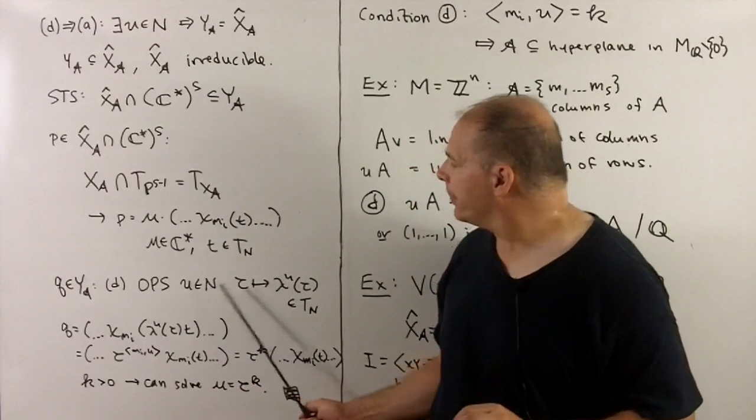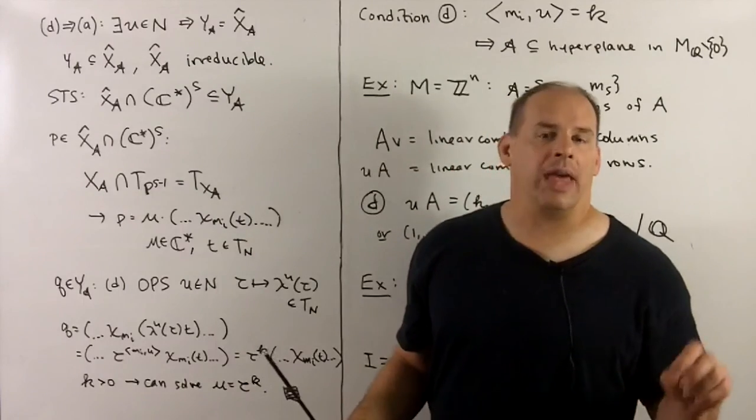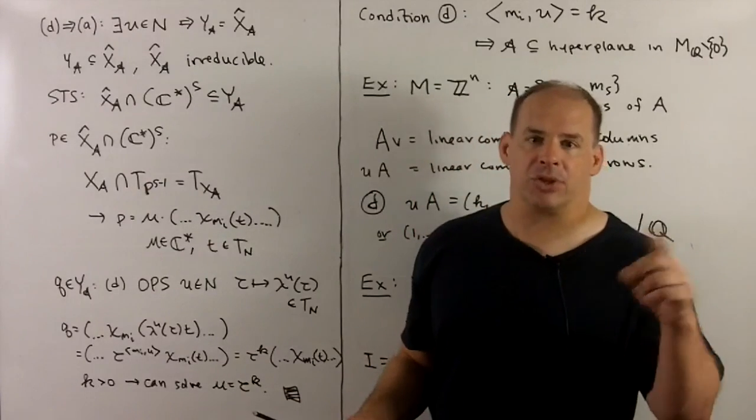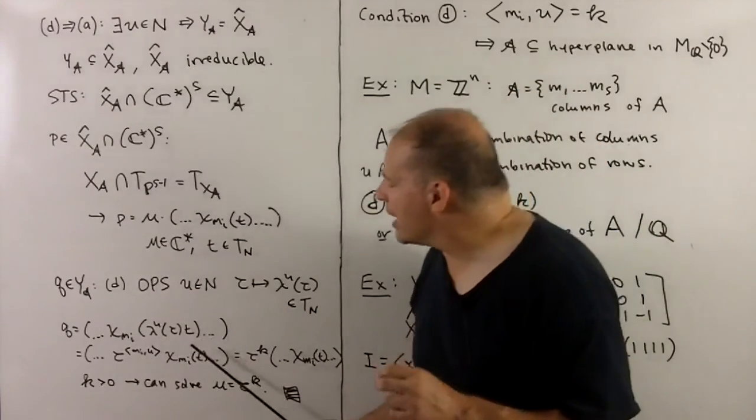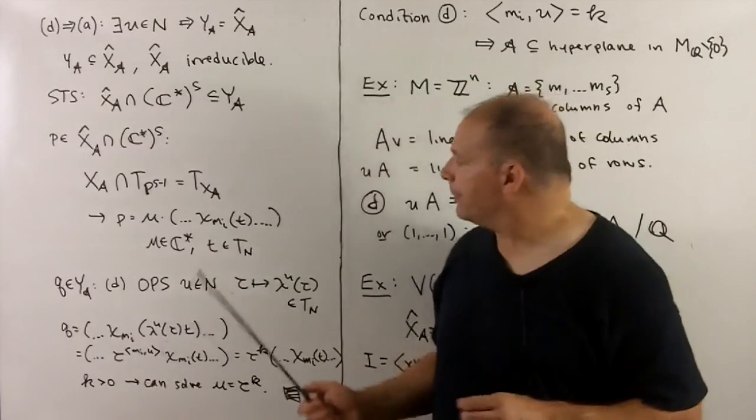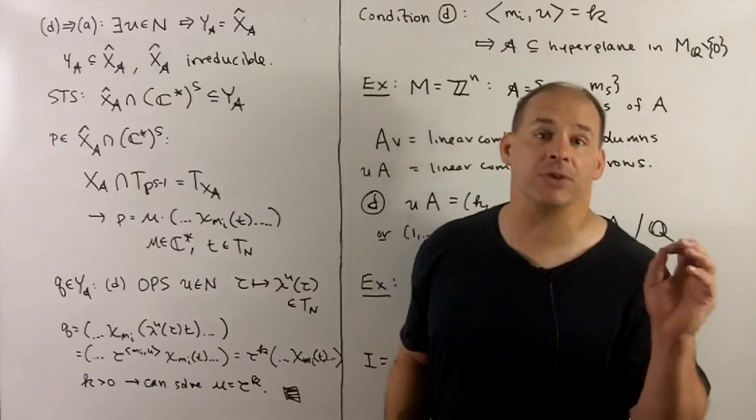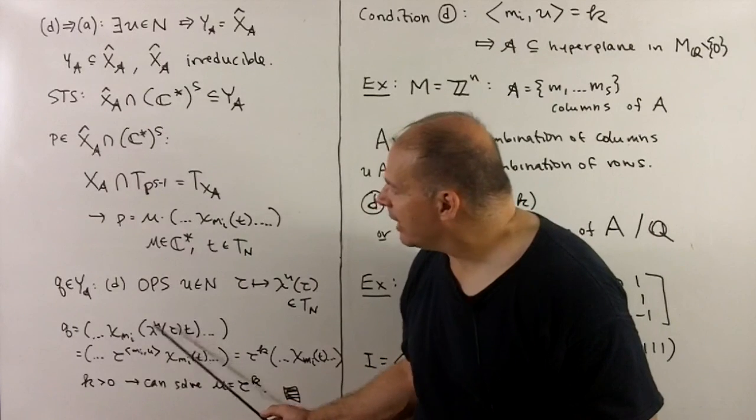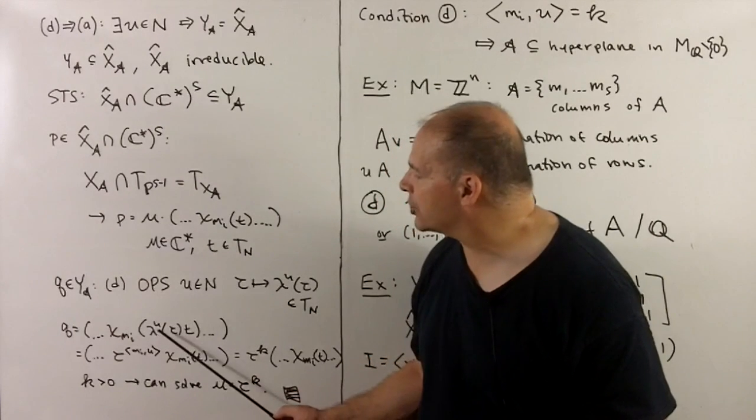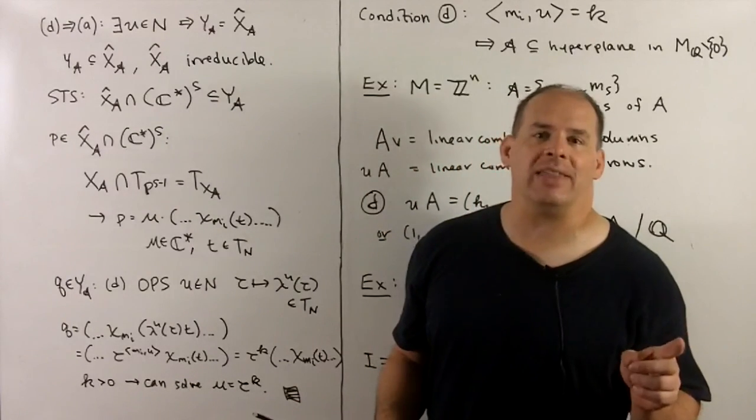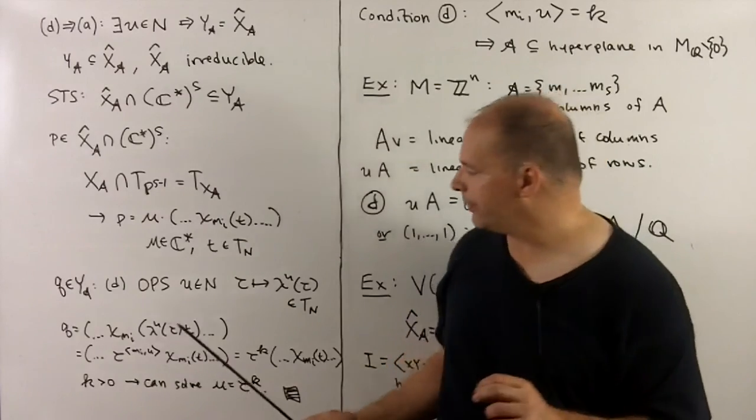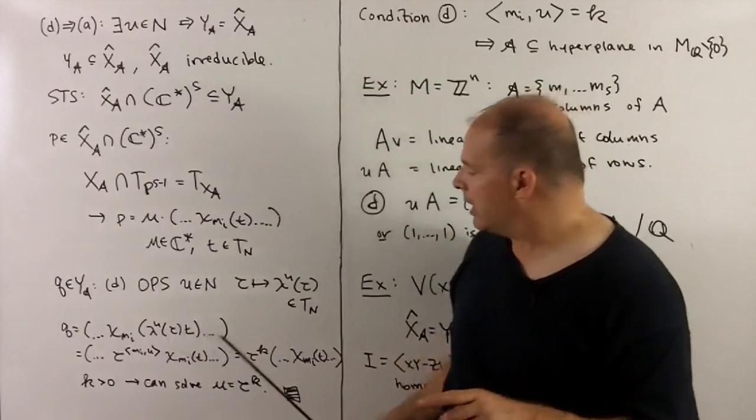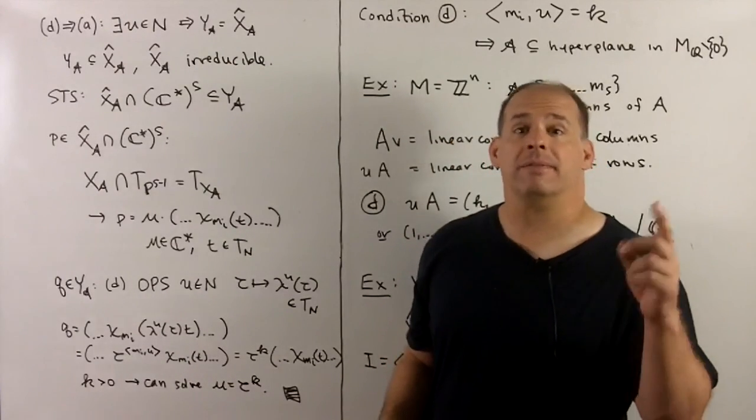We're going to define q in y sub a as follows. By D, we have our one-parameter subgroup u, denoted by lambda upper u. That'll give us elements in t sub a. So q is going to be equal to, we're going to take phi sub a, because it's going to have characters in each entry, applied to the product of phi upper u on tau times the t we have here. And we're going to have to solve for tau. Now, because chi is a character, we can apply it to each entry, and we know when we compose a character with one-parameter subgroup, we bring in the pairing. And by condition D, that pairing is always going to give us k in this case. So we're always going to have coefficient tau to the k, which we can pull out in front. So this is tau to the k times phi sub a on t.